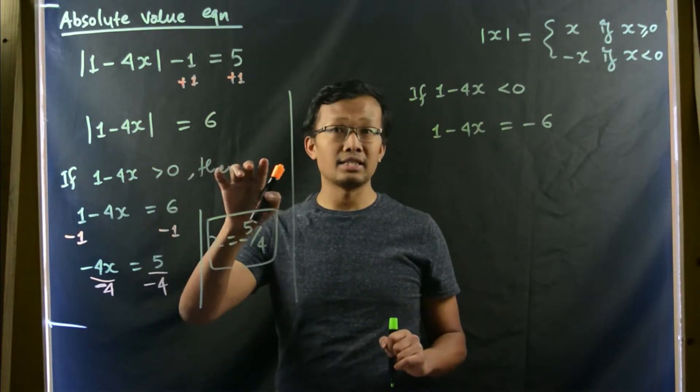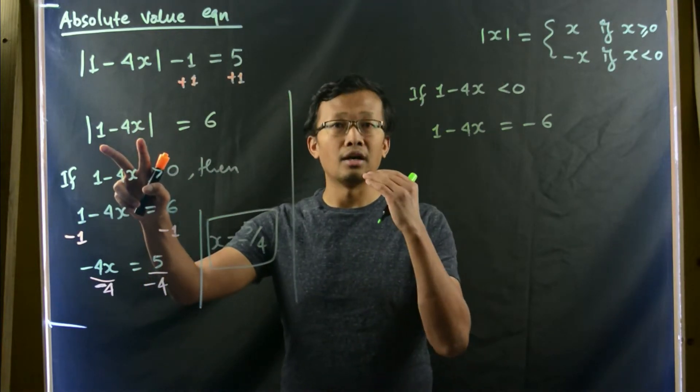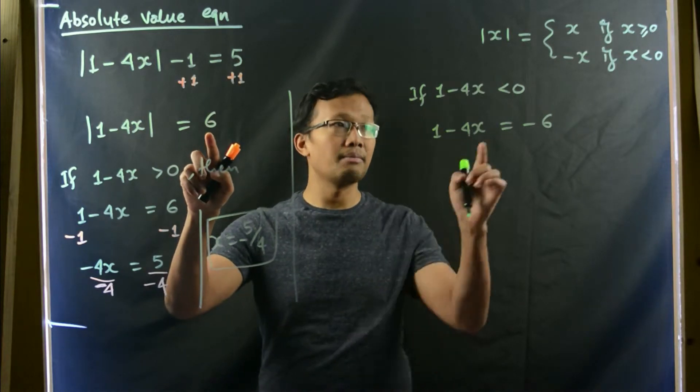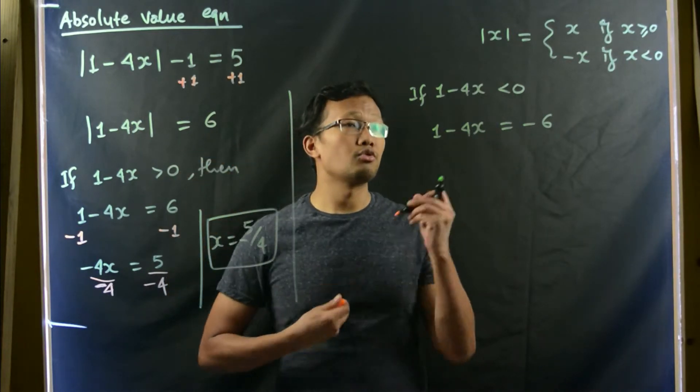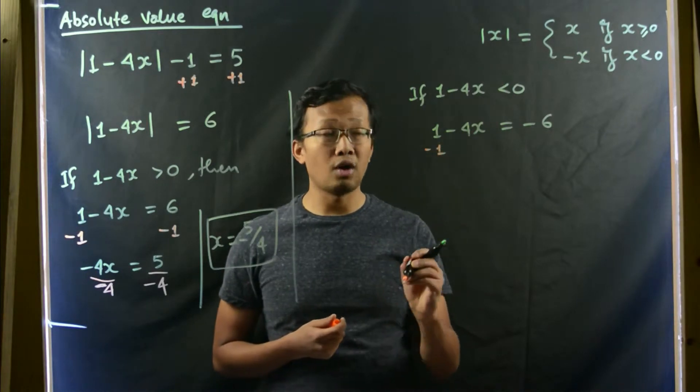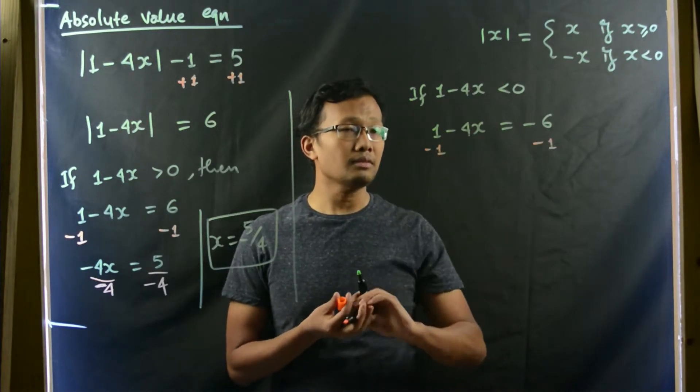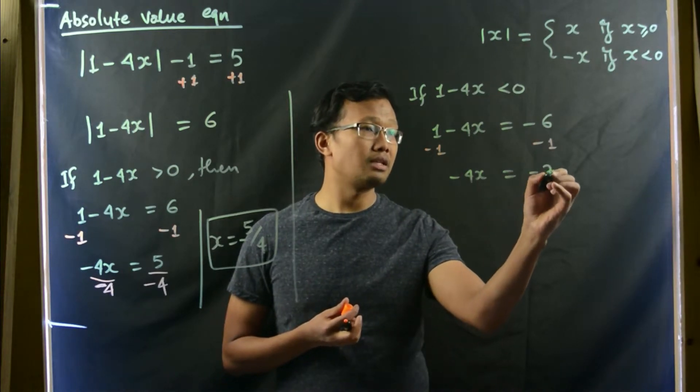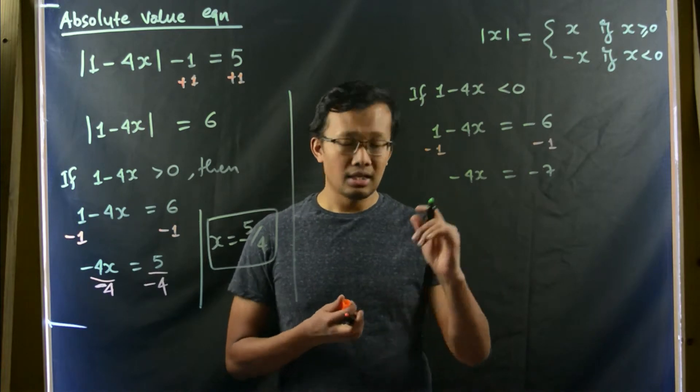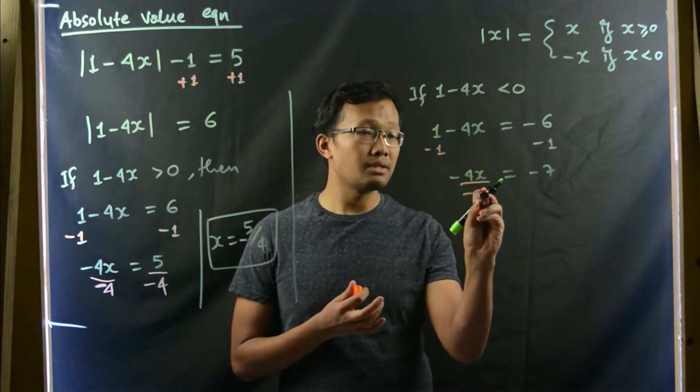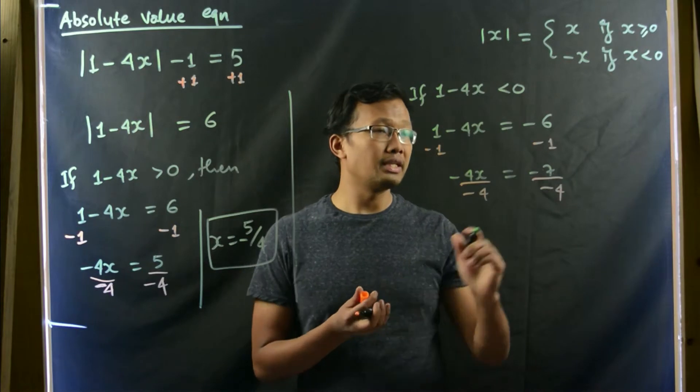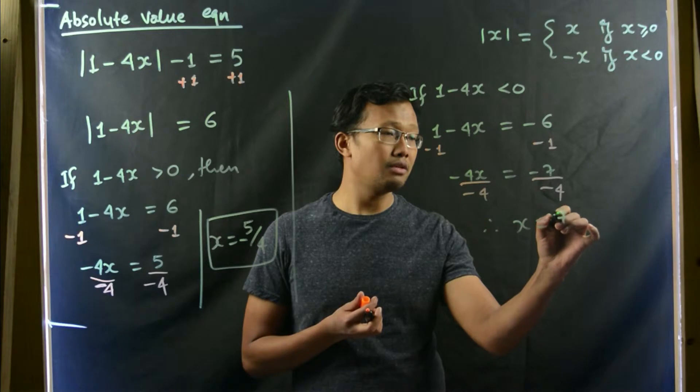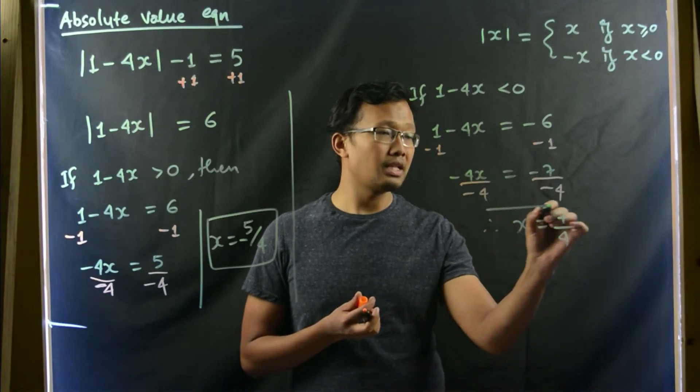If this inner quantity is a negative number, then you multiply this number on the right-hand side by negative 1. Then let us subtract 1 from both sides. We'll be getting negative 4x equals negative 7. Then divide both sides by negative 4. We'll be getting x equals to positive 7 over 4. So that's the second answer.